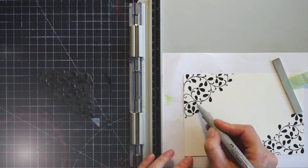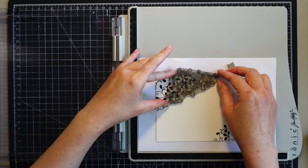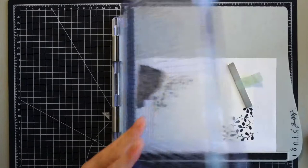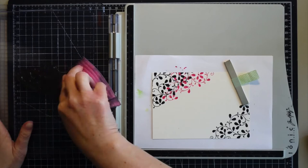Next I started stamping with the distress inks. I used the colors picked raspberry, wilted violet, peacock feathers and lucky clover. I wanted the colored image to be more visible so I placed it a little bit in front of the black image but I also wanted it to be in between. So I repositioned the stamp for each color twice. I also re-stamped when needed but I didn't have any exact way of stamping. I just stamped based on the look.